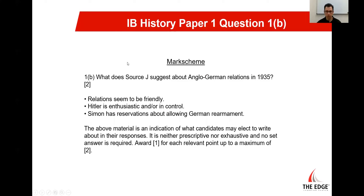So we see the bullet points: the first says relations seem to be friendly — we said that quite explicitly, so we're going to get a point for that. We also said that Hitler is enthusiastic — we got that one more or less accidentally, because we weren't necessarily focusing on just one side when identifying our key points. Then there is a third bullet point: Simon has reservations about allowing German rearmament. That's right — John Simon was stuttering and saying he wasn't sure. We made that point in our response, so we're definitely going to get at least our two points. And that's really all we need to do.